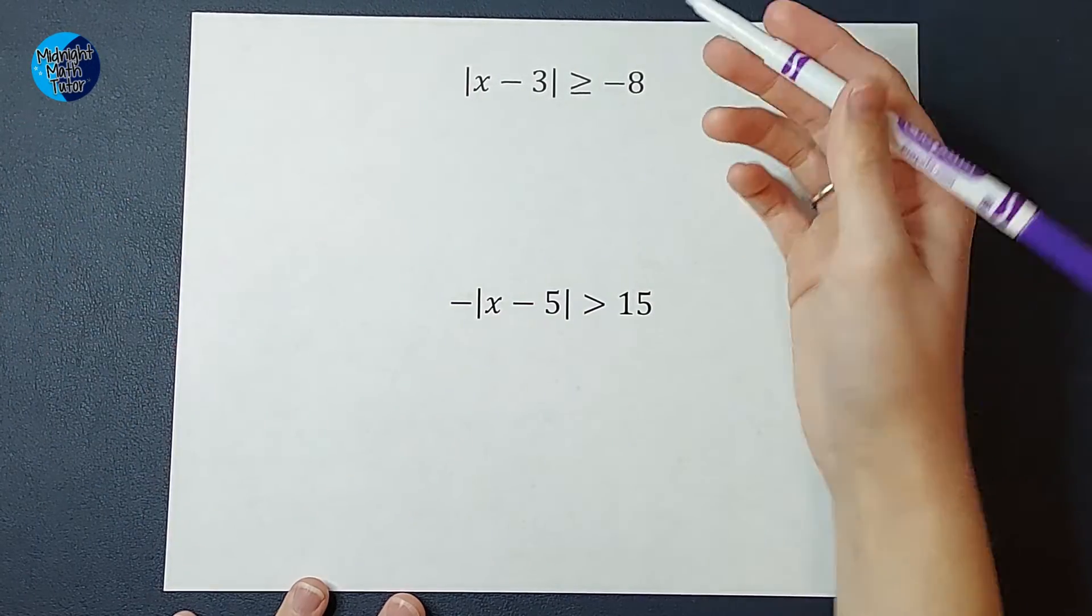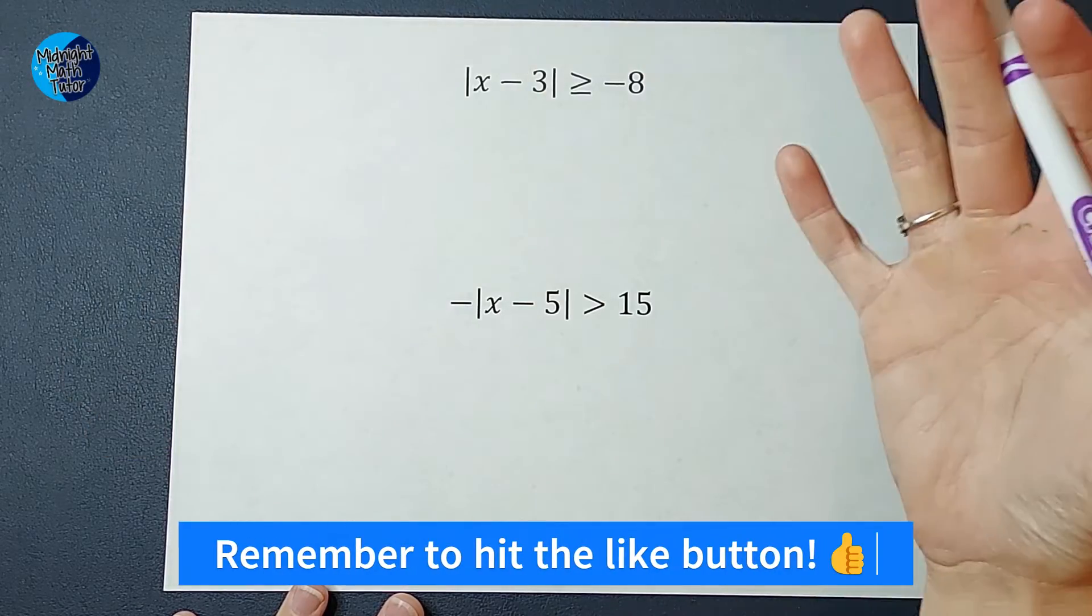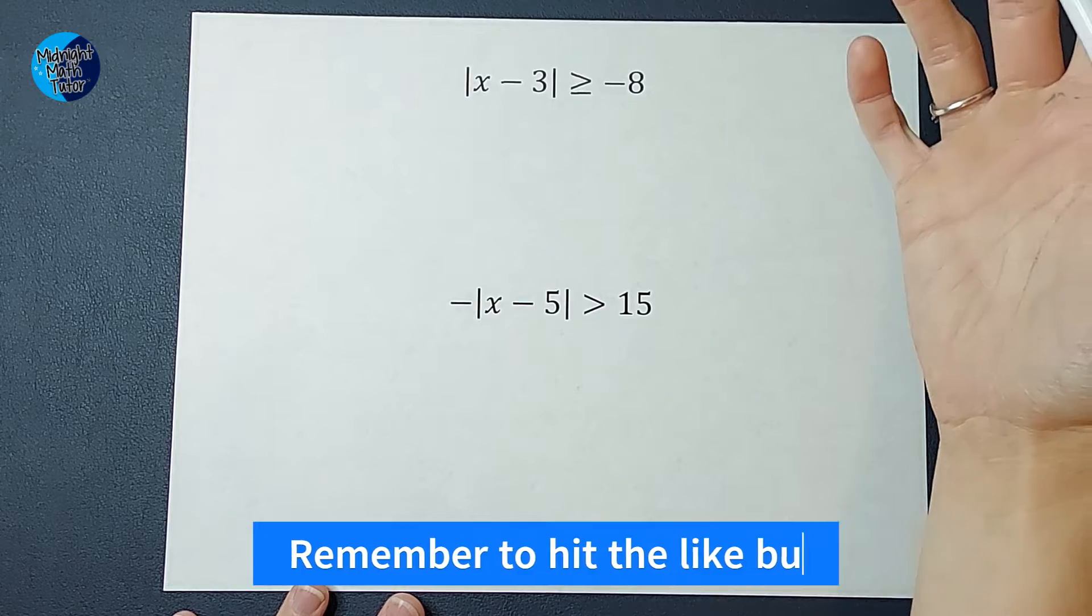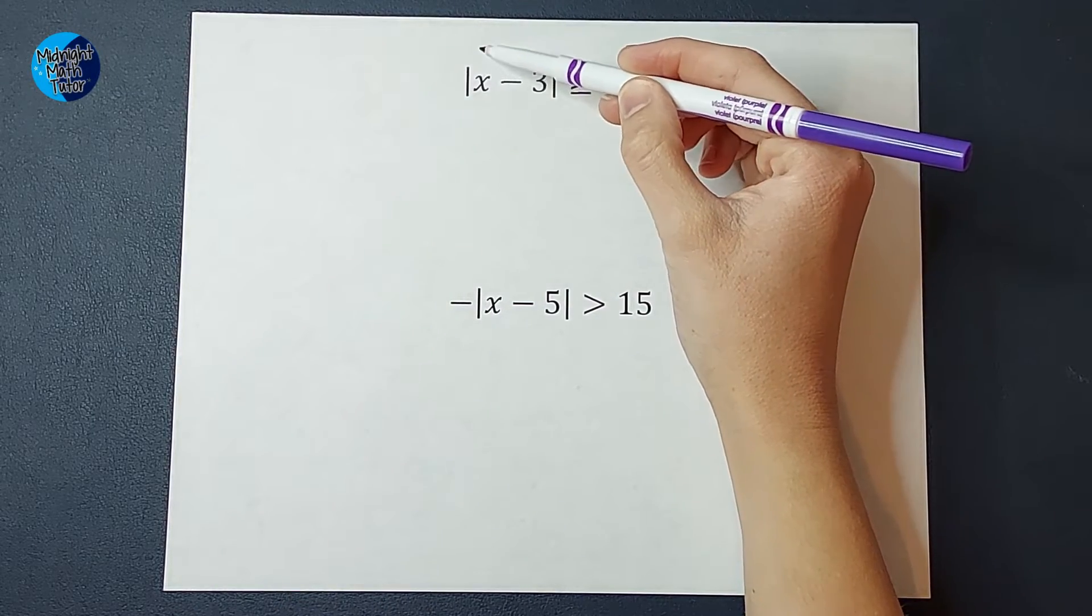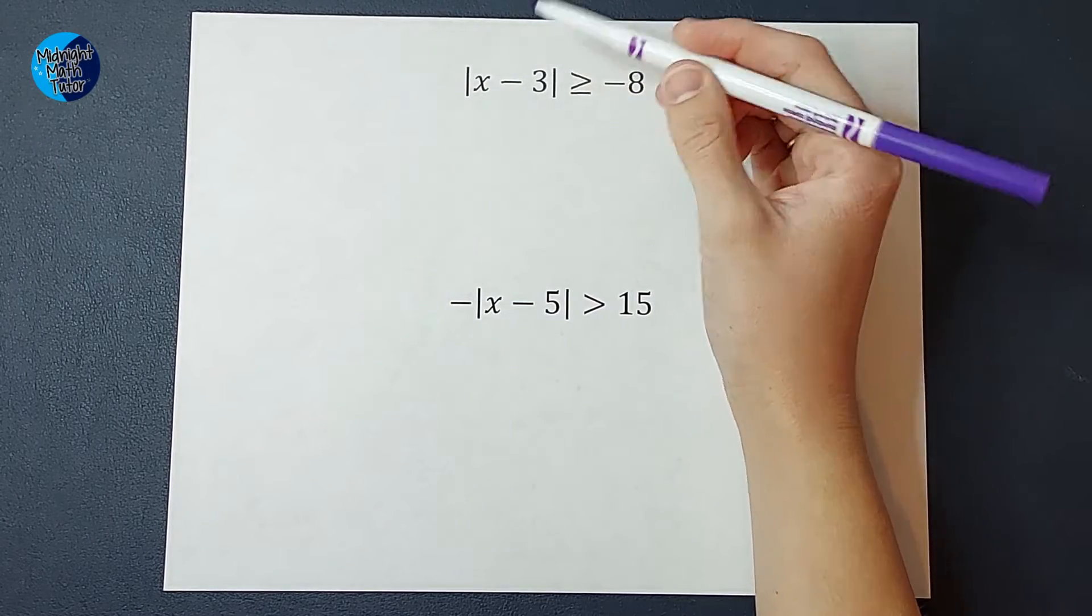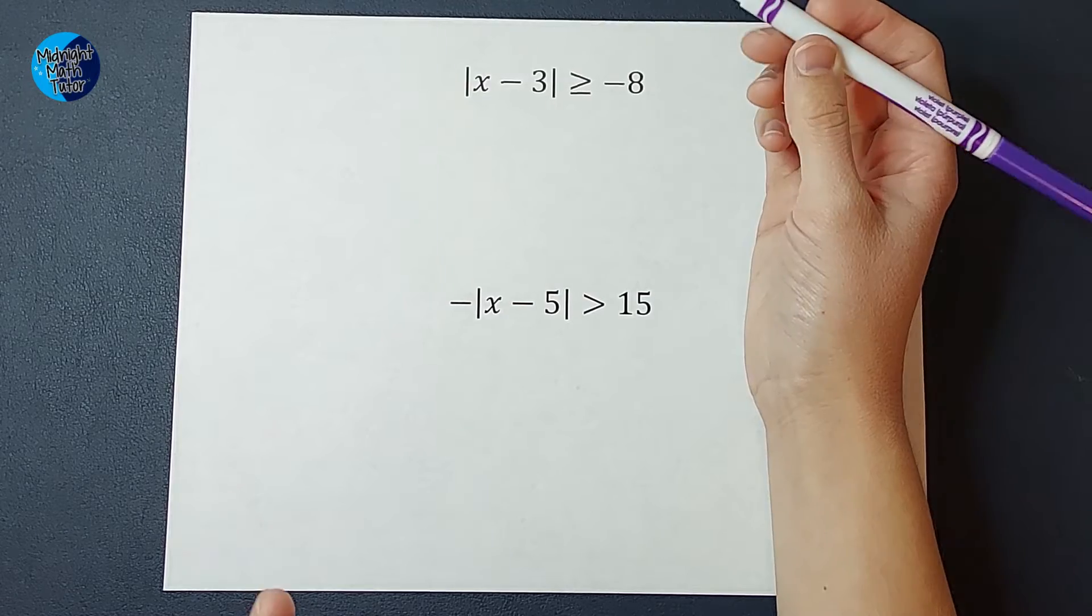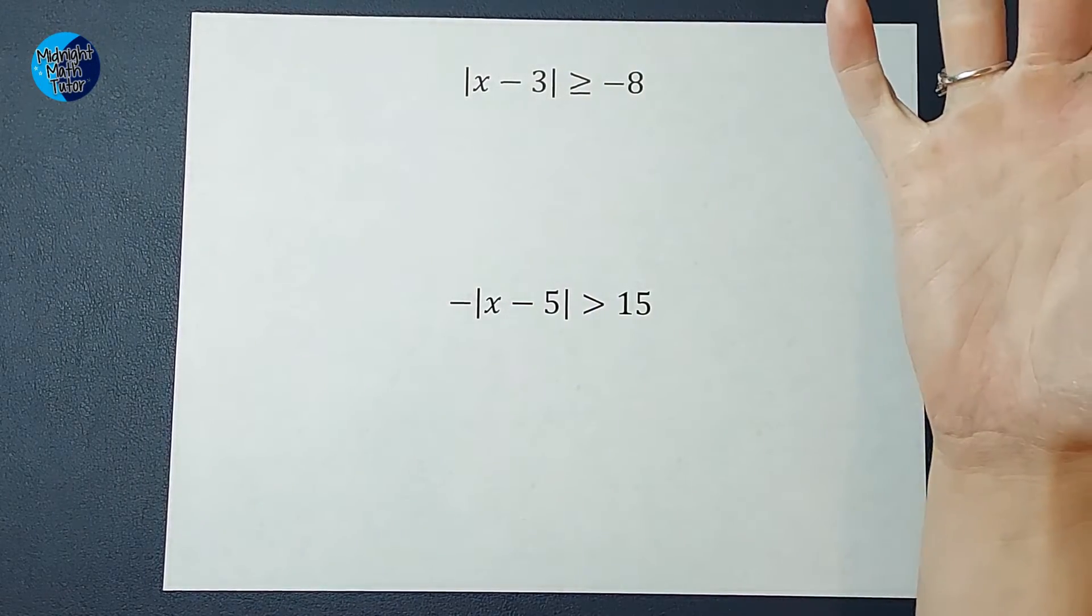So if I have absolute value, the answer to absolute value is always positive. So if I plug in 103, and I get 103 minus 3 gives me 100, the absolute value of 100 is 100, 100 is greater than or equal to negative 8. Perfect. That's true, right?